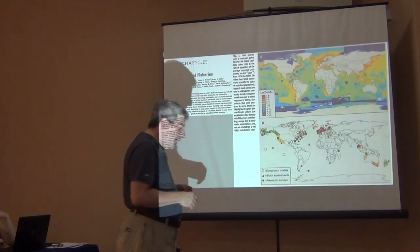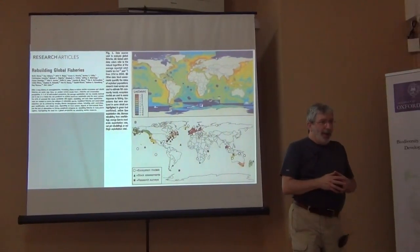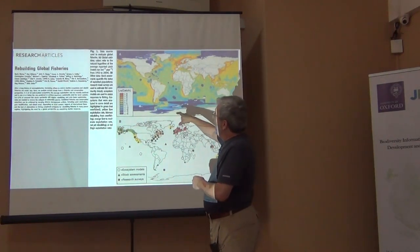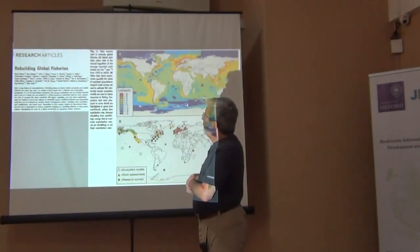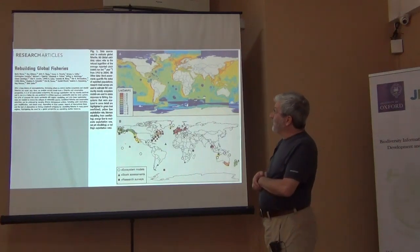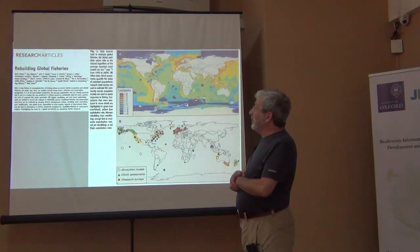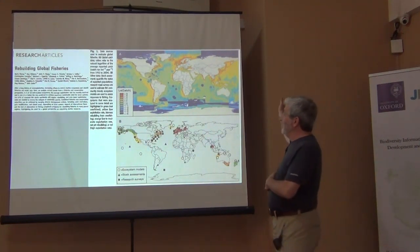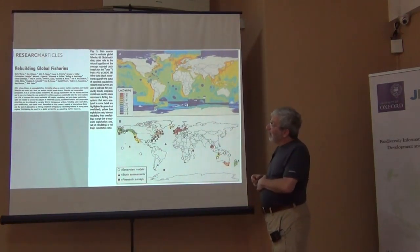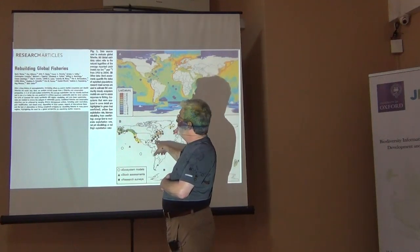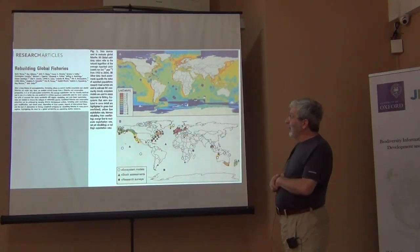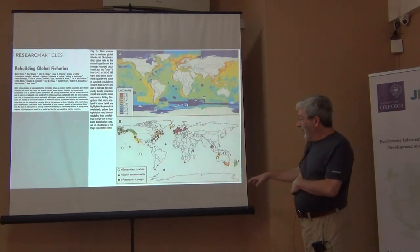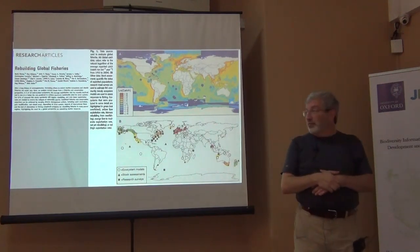These are data where we have detailed data because they're commercial fish. In one of their figures, panel A shows global catch data — the colors refer to the natural logarithm of the average reported catch from 1950 to 2004, with some big interpolation. Panel B shows other data: stock assessments quantify the status of exploited populations, research trawl surveys estimate fish community trends, and ecosystem models assess responses to fishing.